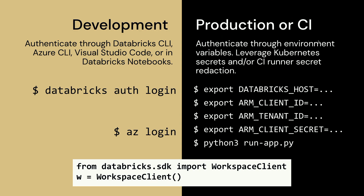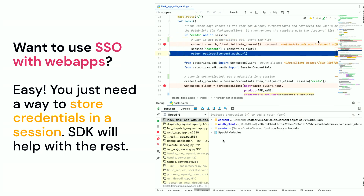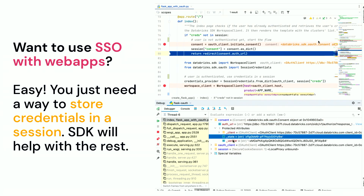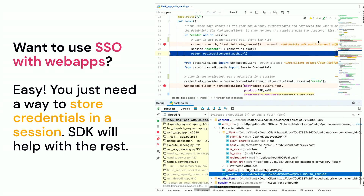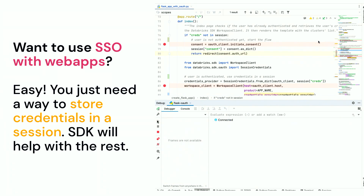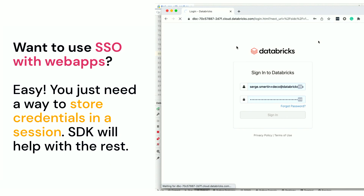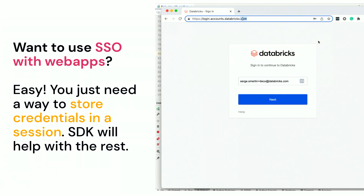Databricks has functionality for OAuth 2-enabled single sign-on applications, allowing users to go through an SSO flow using Azure Active Directory or Okta to authenticate to Databricks APIs — without storing or transmitting any personal access tokens. It's fully refreshable, interactive, and more secure.